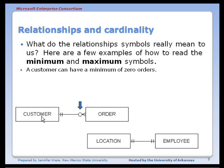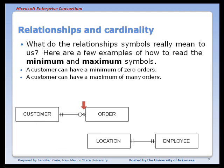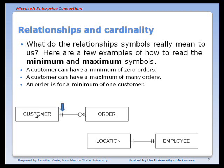A customer can have a minimum of zero orders, meaning you might have data about a customer who has not placed an order with you yet. A customer can have a maximum of many orders. Reading from the other end, an order can have a minimum of one customer — you can't have an order without it being associated with a customer — and a maximum of one customer. Any one order is for one and only one customer.